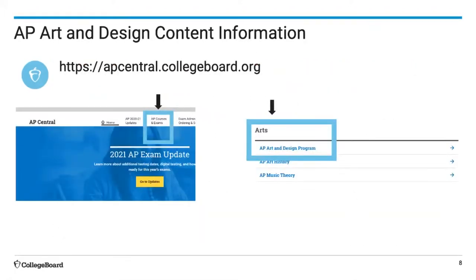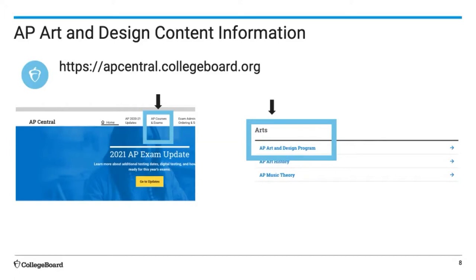You can access more information about AP Art and Design by going to apcentral.collegeboard.org. Once you are there, click on AP Courses and Exams, and at the top you'll see Arts. Click on AP Art and Design Program, and that will take you to the landing page with everything you need to know about the three AP Art and Design portfolios.